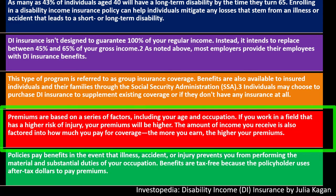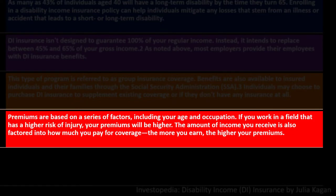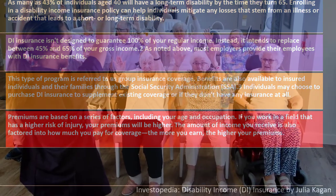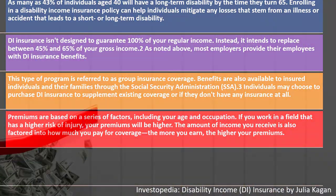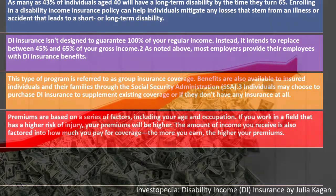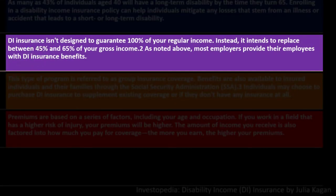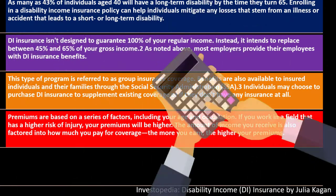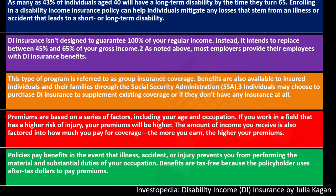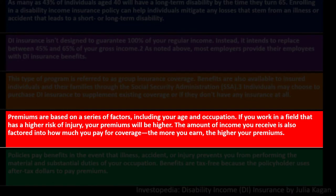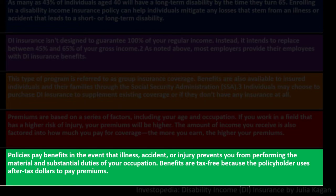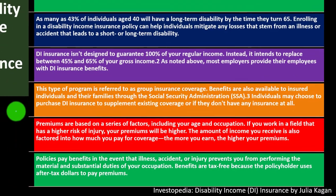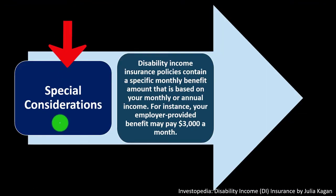The amount of income you receive is also factored into how much you pay for coverage — the more you earn, the higher your premiums. Age is a factor as well because as we get older, we're more likely to be disabled at some point. If you get disabled, they pay out a percentage of your income, so higher income means it costs them more — part of the actuarial calculation. Policies pay benefits in the event that illness, accident, or injury prevents you from performing material or substantial duties for your occupation. Benefits are tax-free because the policyholder uses after-tax dollars to pay premiums.